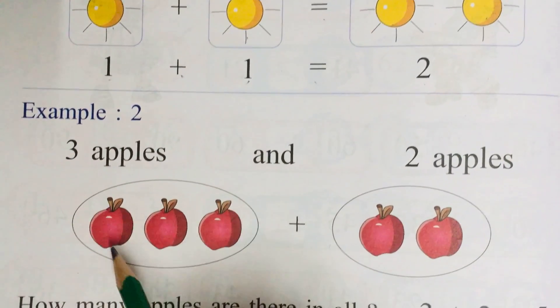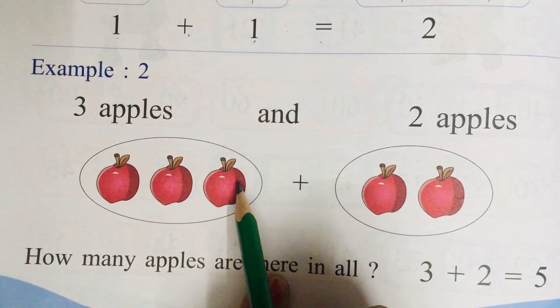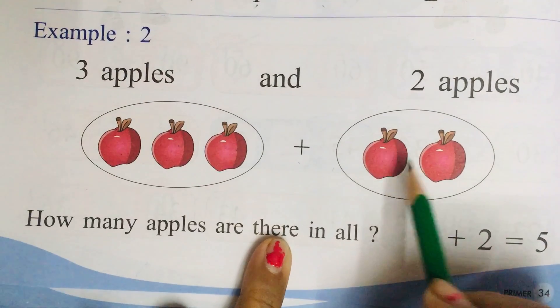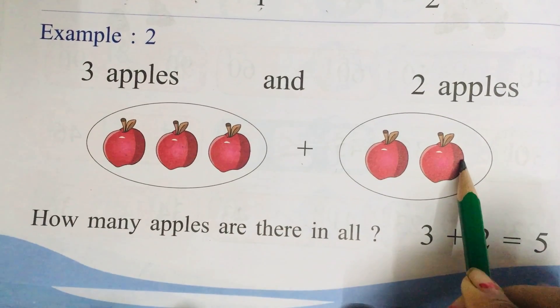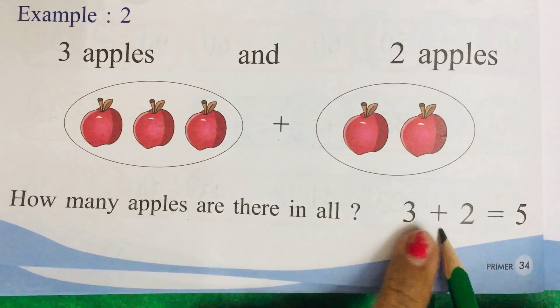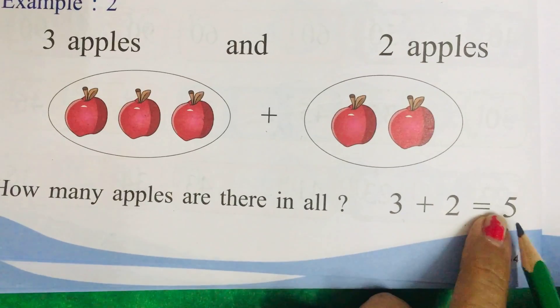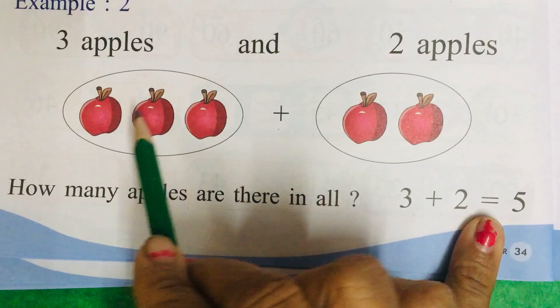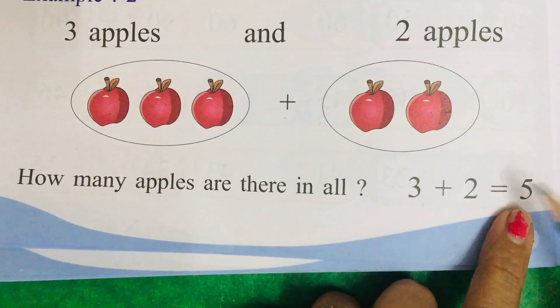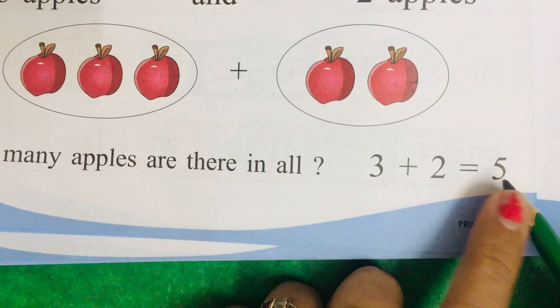See, 1, 2, 3. How many apples are there? There are 3 apples. Plus count these apples, 1, 2. How many apples? 2 apples. So how we will write? See, look here. 3 plus 2 equals to, now count all the apples, 1, 2, 3, 4, and 5. So what answer will come? The answer will come 5.